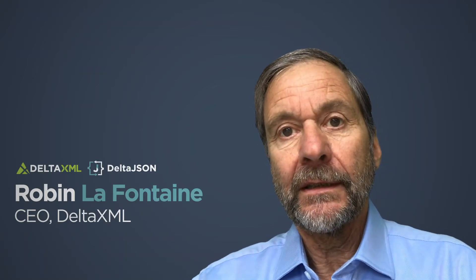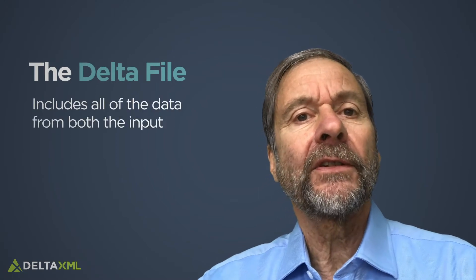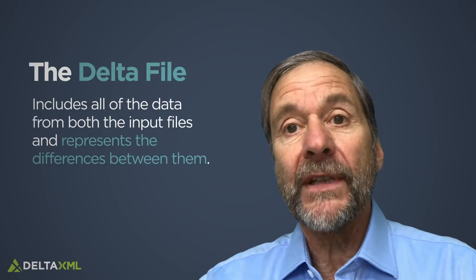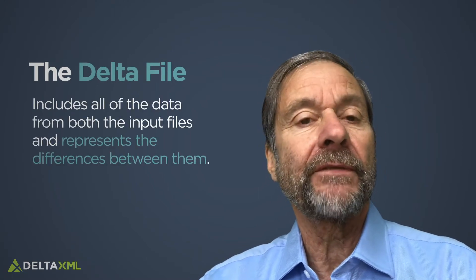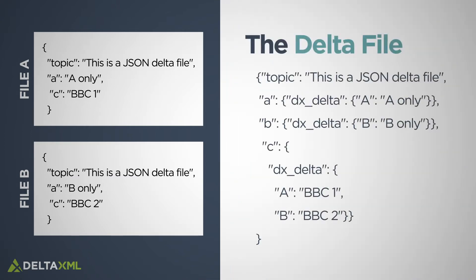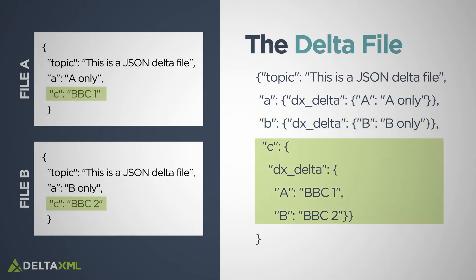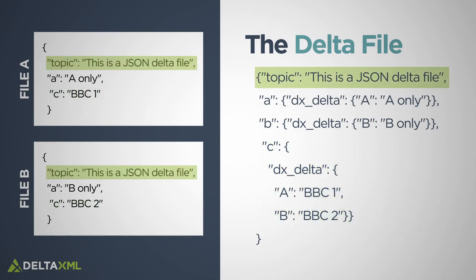DeltaJSON provides you with a JSON delta file, and it's worth explaining what this is and how it can be used. The delta file includes all of the data from both the input files and represents the differences between them. If you compare file A with file B, the delta shows any items that are in A only, in B only, or where the value differs between A and B. Where an item is the same in both files, no changes are shown.